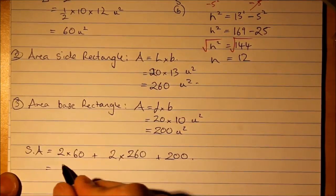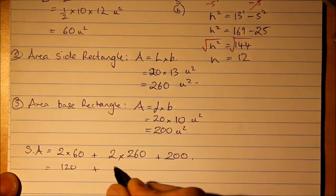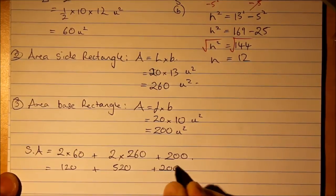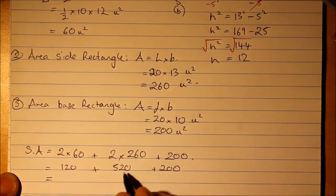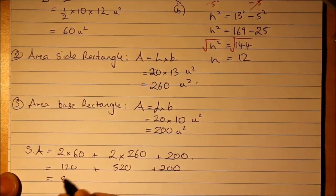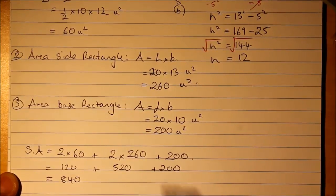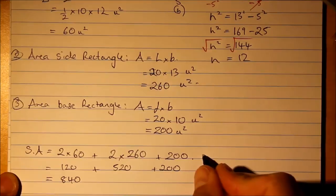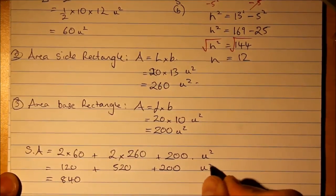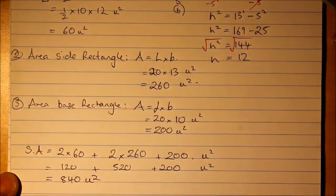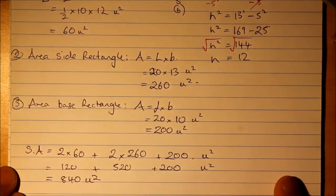So that's 120 plus 520 plus 200. 840. Now, because it's surface area, we are definitely talking units squared.